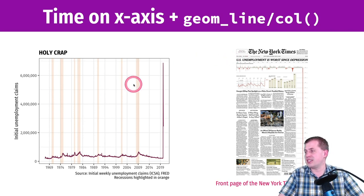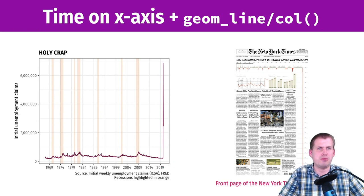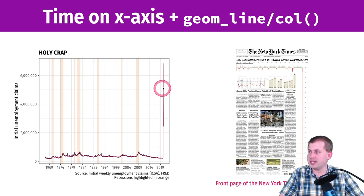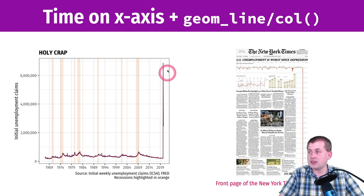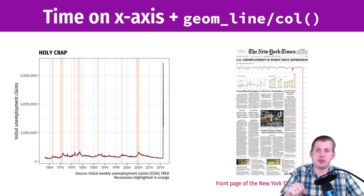Looking at this example, this is the initial unemployment claims from 1969 up until late May 2020. You can see the huge impact that COVID-19 has had on unemployment, going up to almost 8 million claims in one week. It's starting to drop down now, but this is remarkable. And this is just shown with a line — just geom line — and that's all we have.